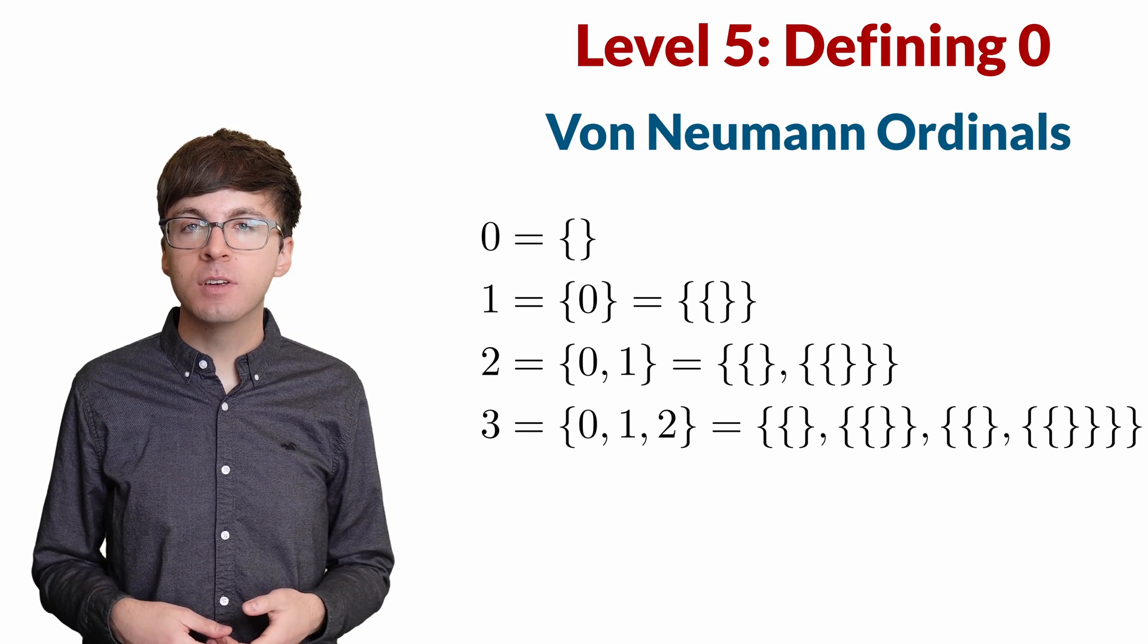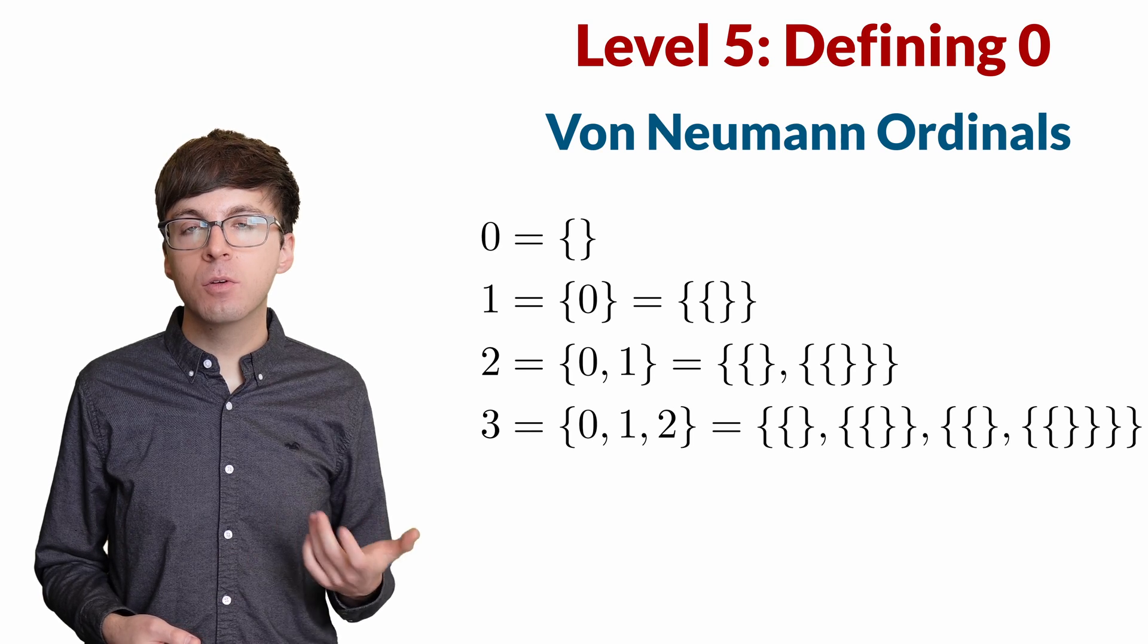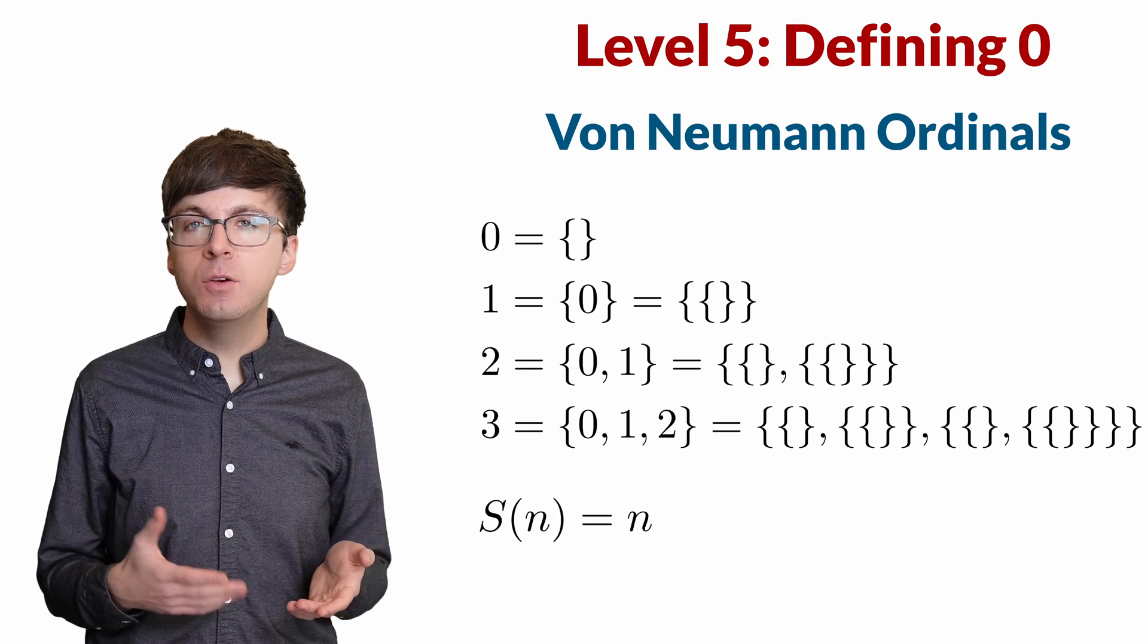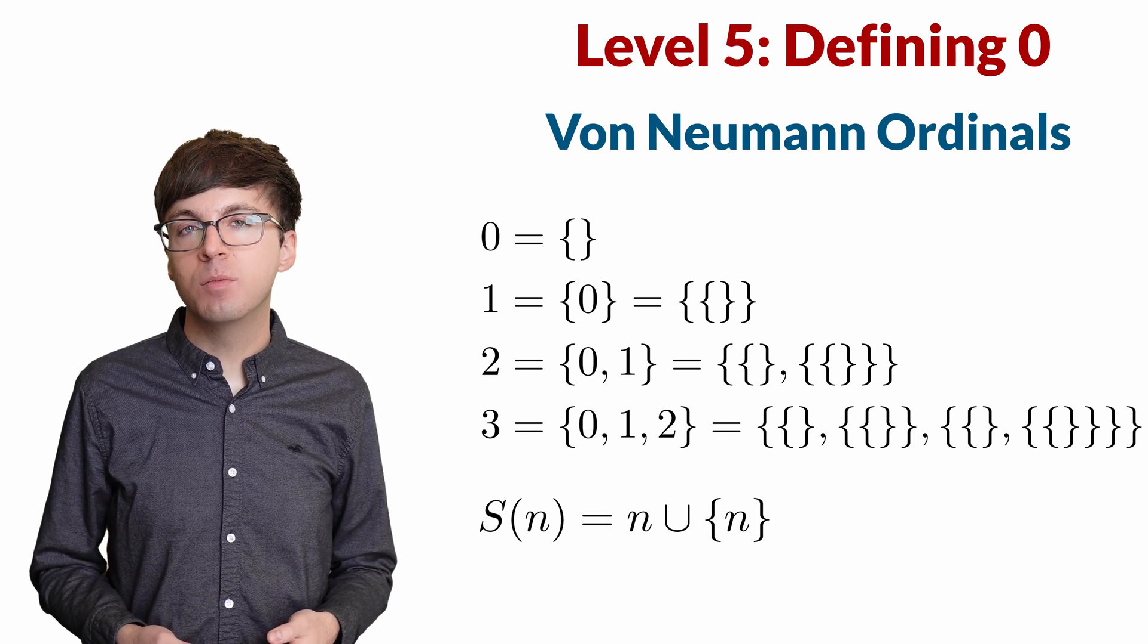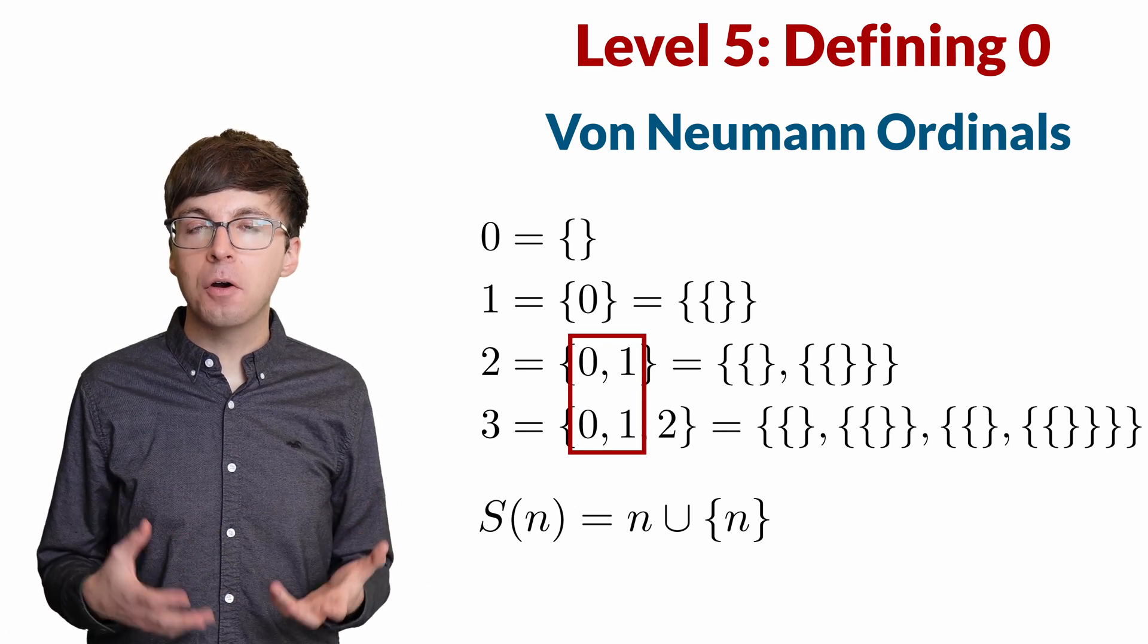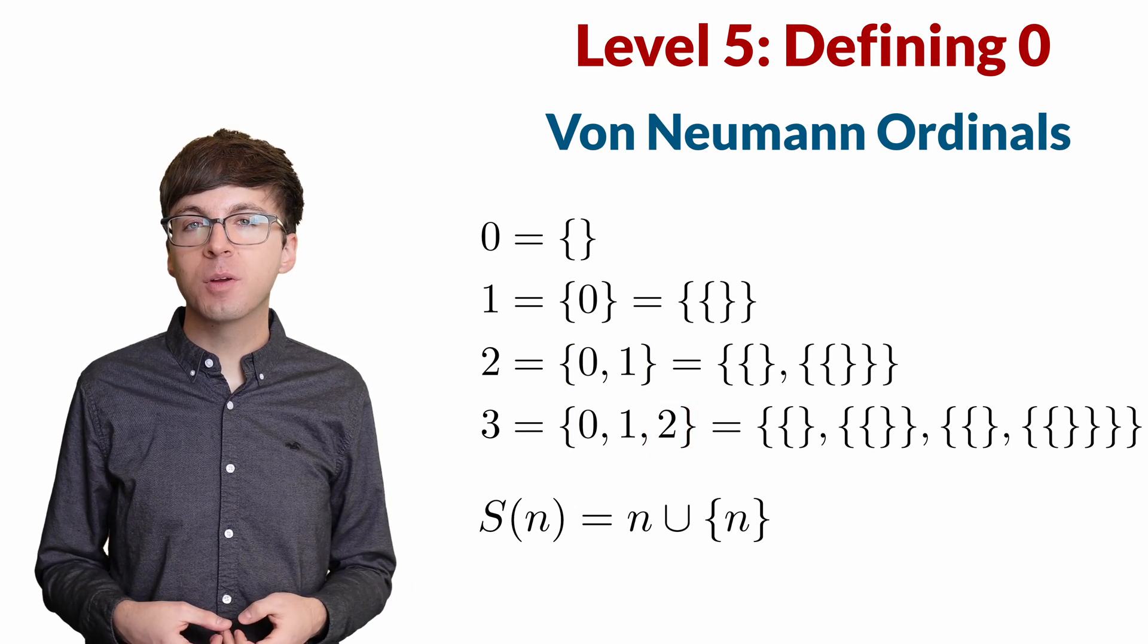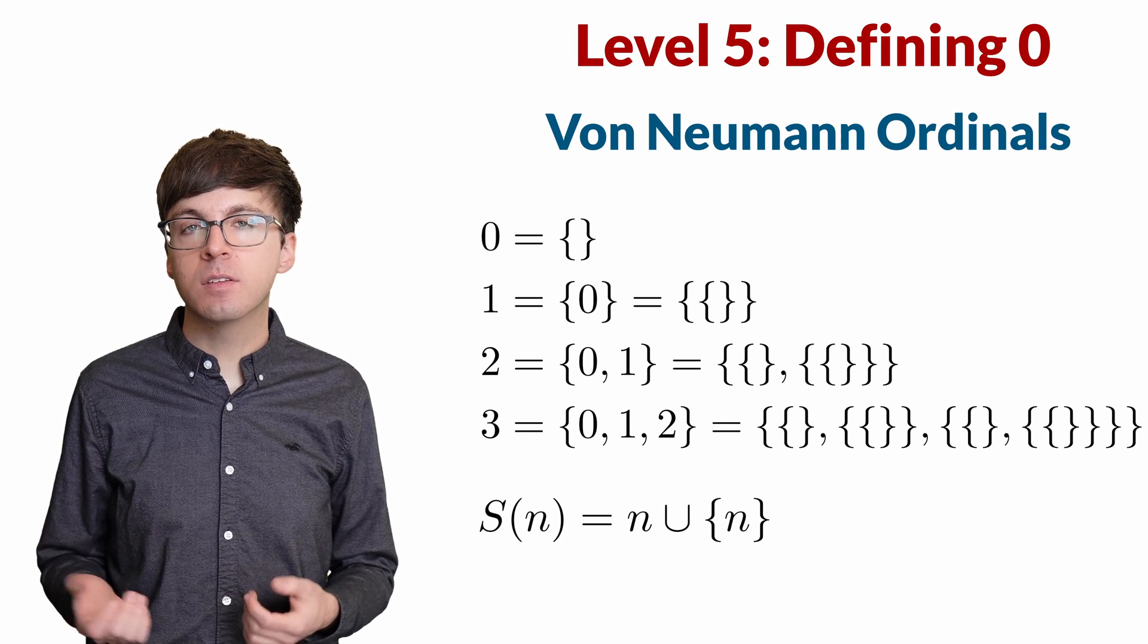We can write a successor function to define each following natural number. The successor of n, s of n, is equal to n union the set that contains n. This is exactly the pattern we've been doing. Three is the successor of two, so it contains everything that two contained and also the number two itself. We can build all of the natural numbers by defining zero to be the empty set and using this successor function.